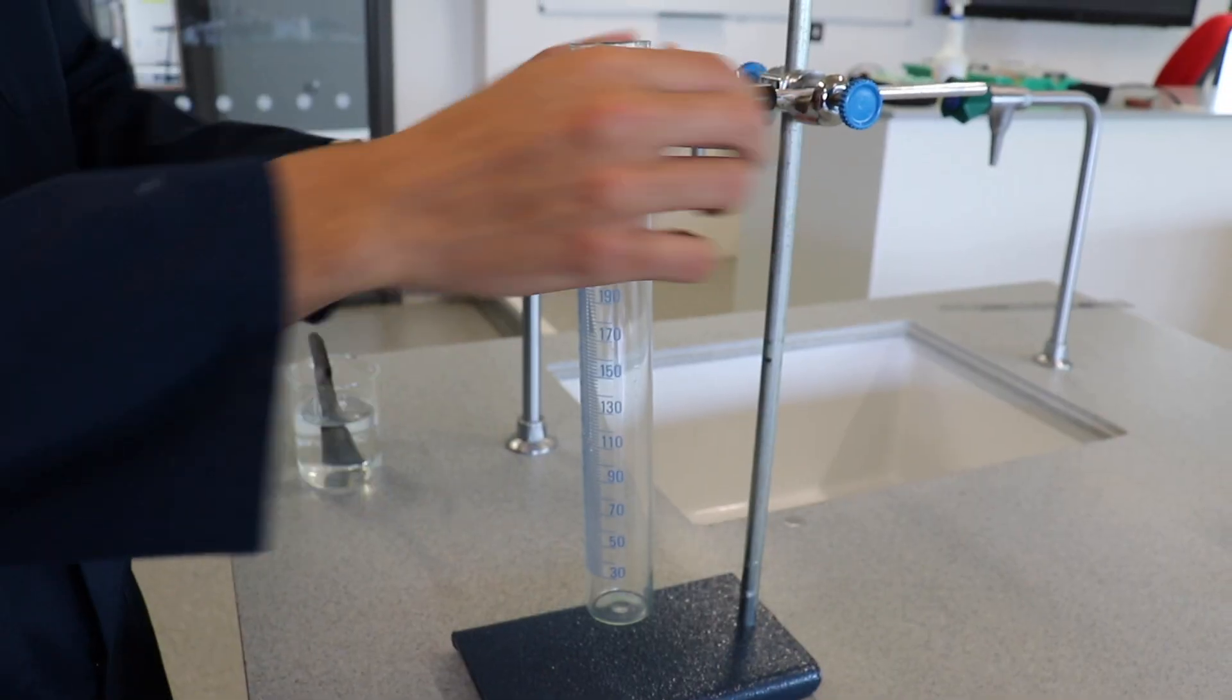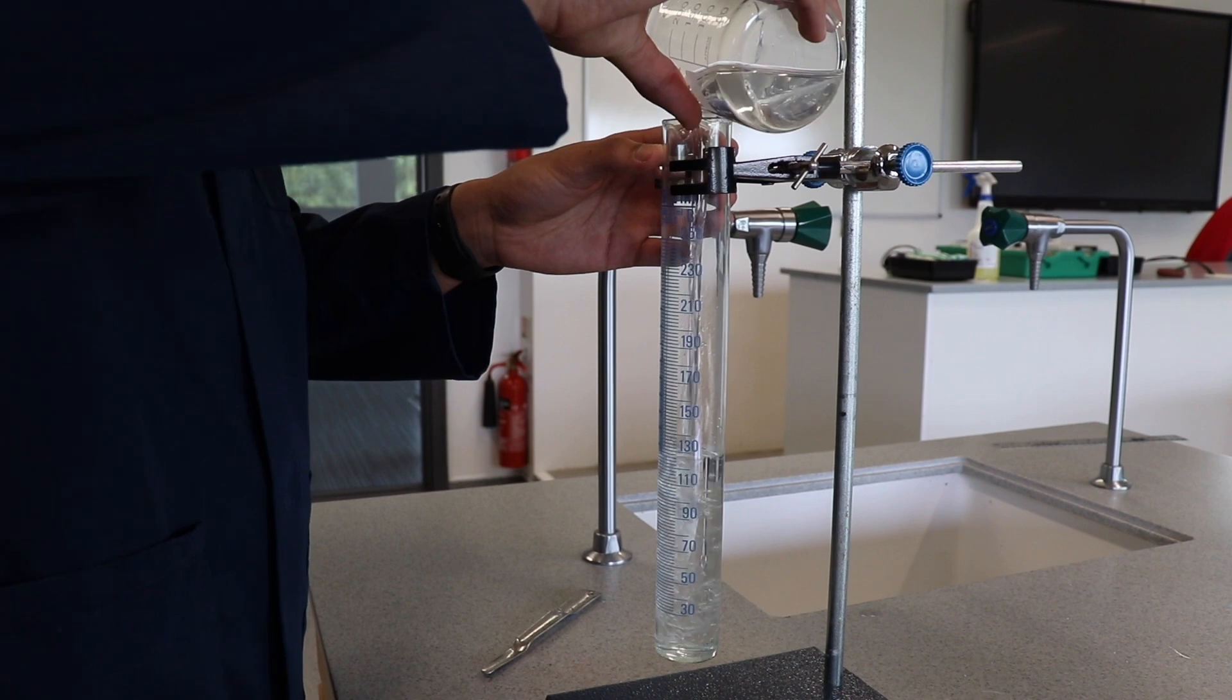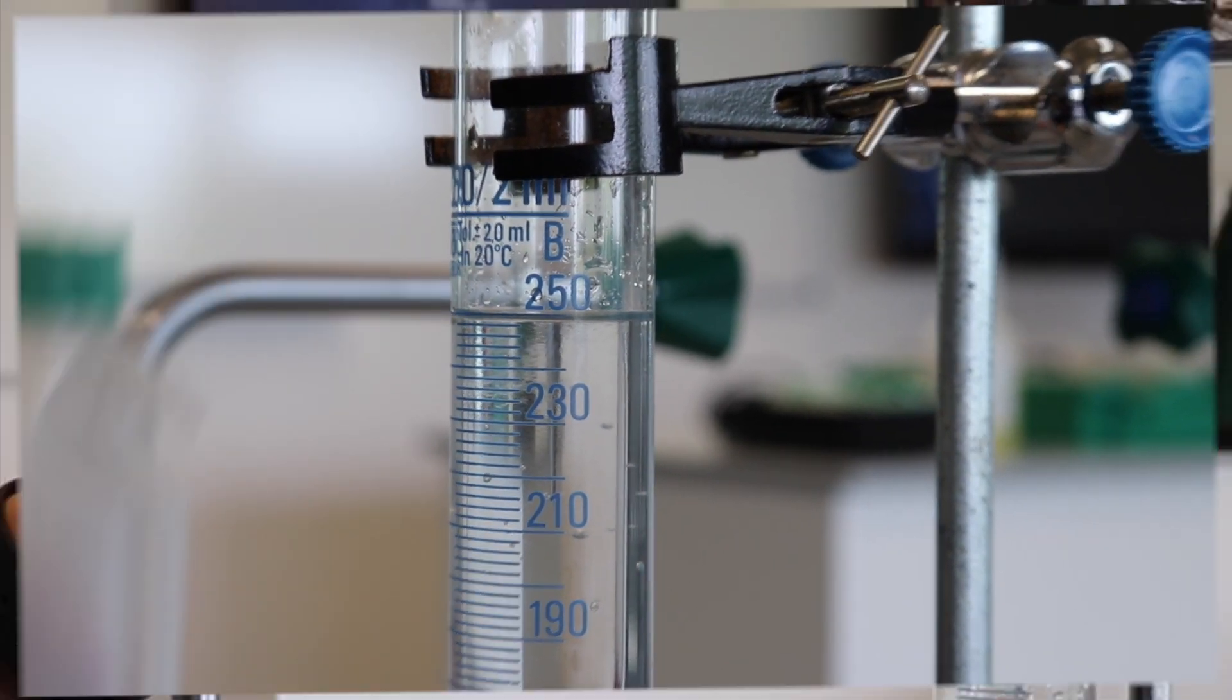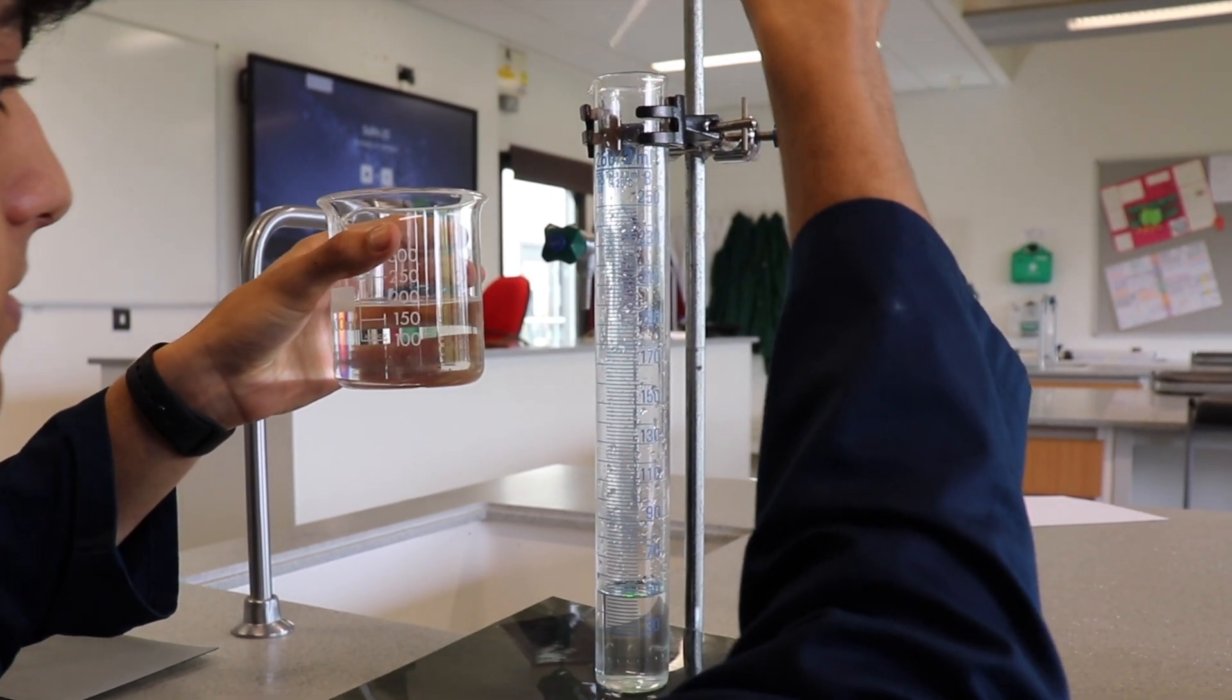We then weighed out 50g of sugar, dissolved it in 250cm³ of water, forming a sugar solution of 0.2g per cm³. We kept this aside in a beaker, to then add specific volumes of the solution to the cylinder.